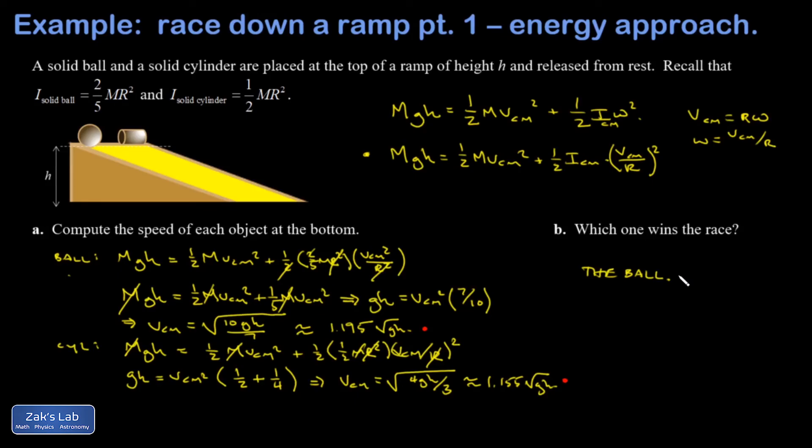I wanted to point out, to aid your physical intuition, the reason the ball wins is because it has a smaller moment of inertia. That means as gravitational potential energy is converted into kinetic energy, less of it is going into the spin and more is going into the translational motion. So objects with small moments of inertia end up moving faster as they roll down a hill.